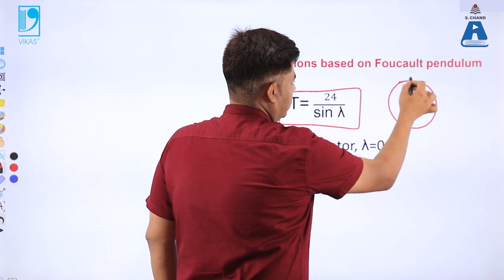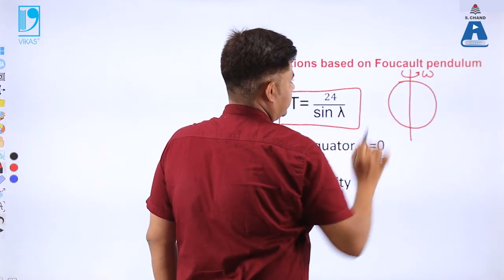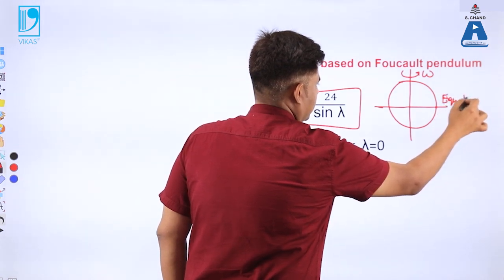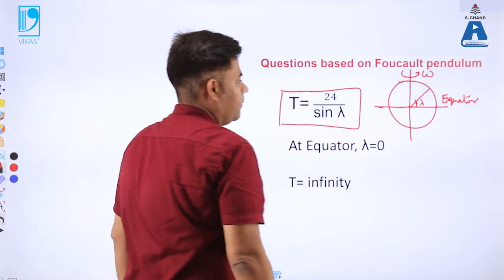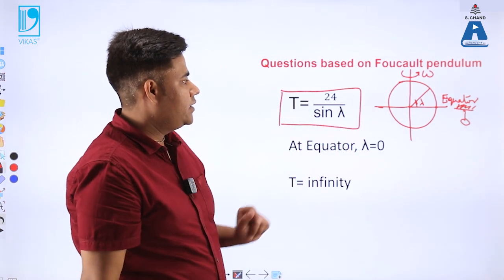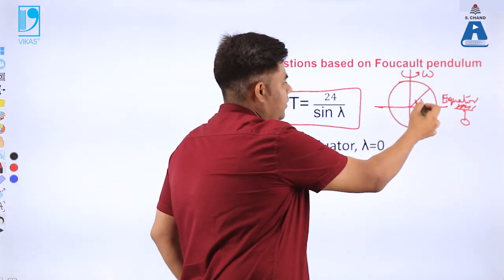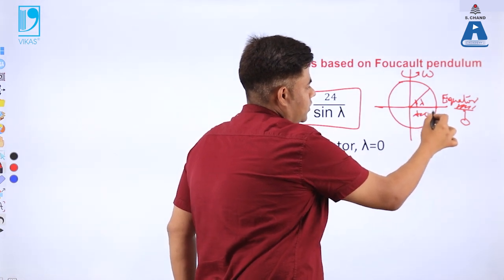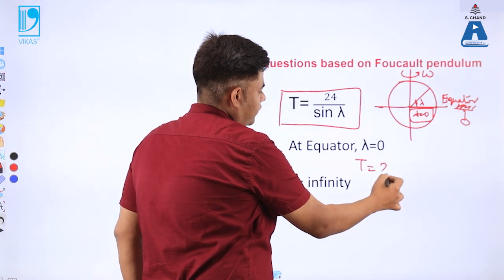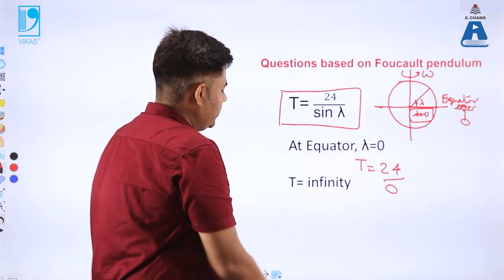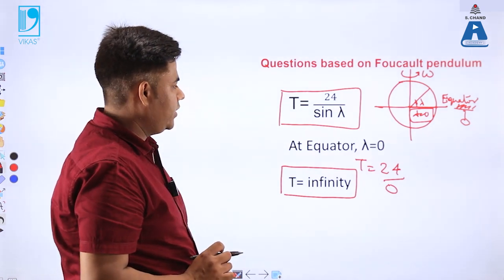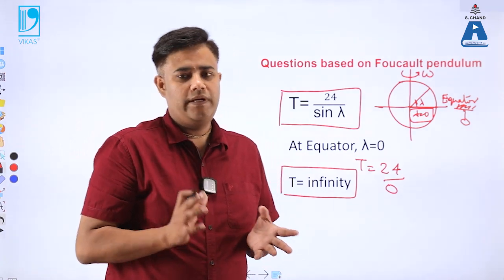Let us say the Earth rotates at angular velocity omega, and we place the Foucault's pendulum at the equator where lambda equals 0. Substituting lambda as 0 into the expression: T equals 24 divided by sin 0, which is 24 divided by 0 — giving us infinity. So we cannot use the Foucault's pendulum at the equator because it would take infinite time to complete one revolution.